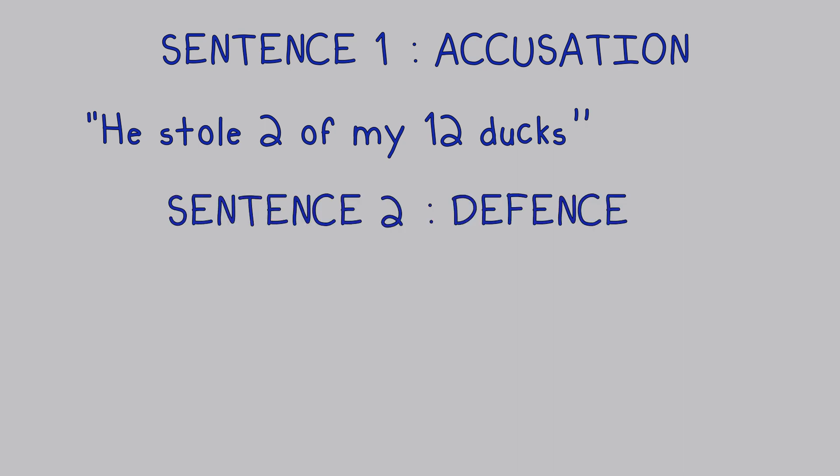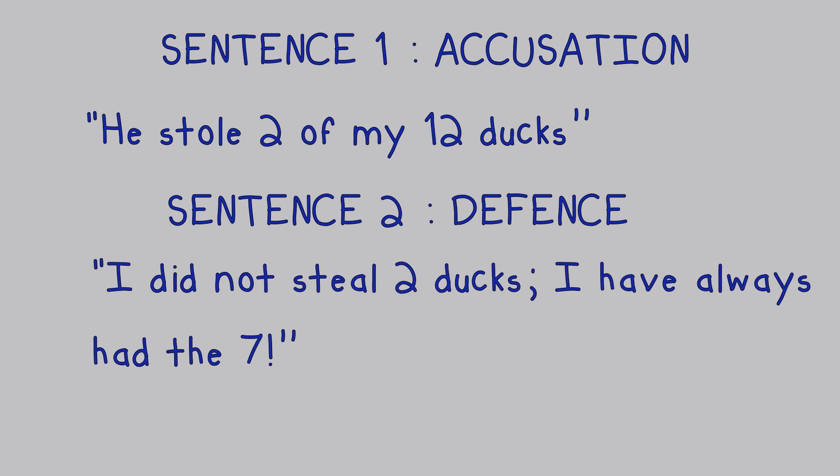First, let's summarize the statement of accusation as reported by person X: 'He stole two out of my 12 ducks.' Sentence one, accusation: he stole two of my 12 ducks. Now let's summarize the statement of defense as established by person Y to the judge: 'I did not steal two ducks, I've always had seven.' Sentence two, defense: I did not steal two ducks, I've always had the seven.